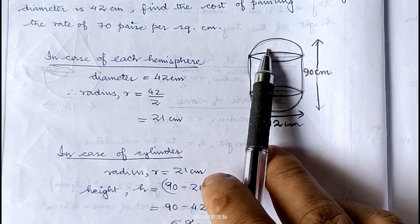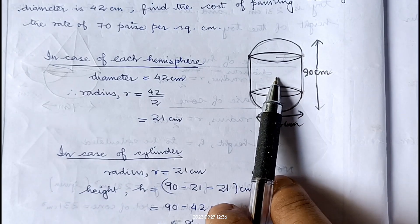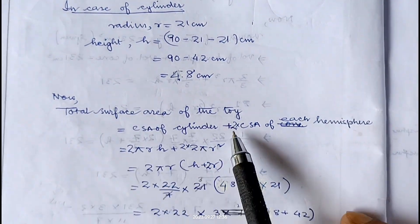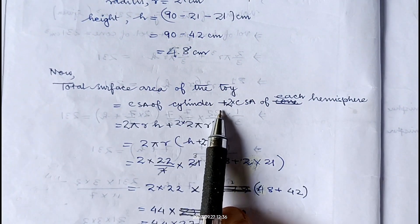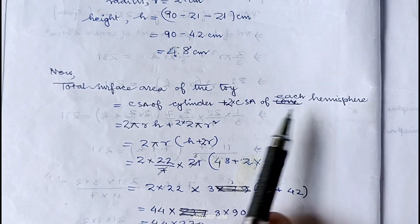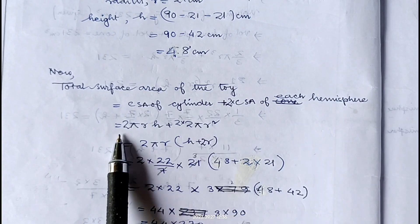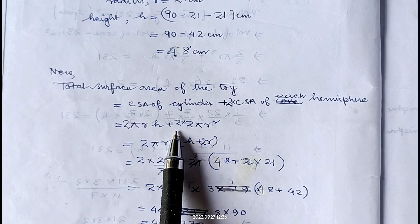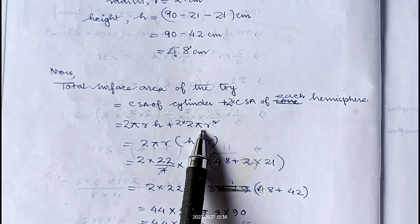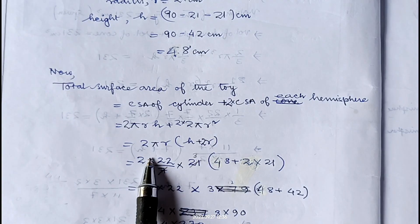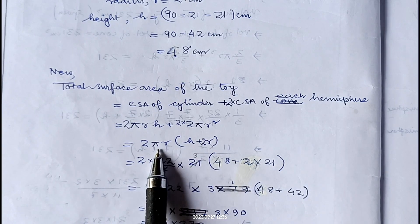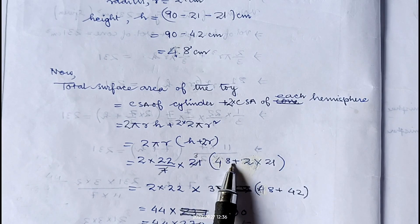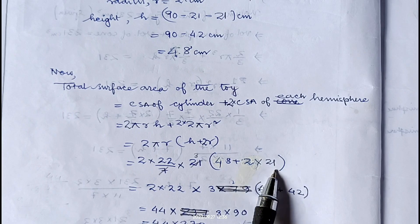Total surface area of the toy equals curved surface area of the cylindrical part plus 2 into curved surface area of each hemisphere. Curved surface area of cylinder is 2 pi r h and for each hemisphere it is 2 pi r squared. Since there are two hemispheres, it becomes 2 into 2 pi r squared. Taking 2 pi r common, we get 2 pi r into (h plus 2r).